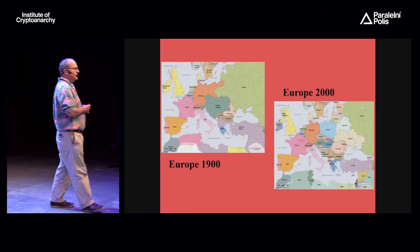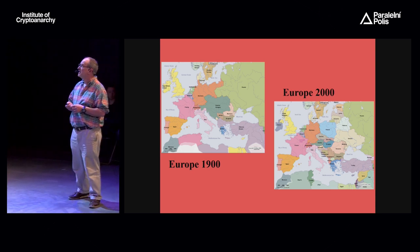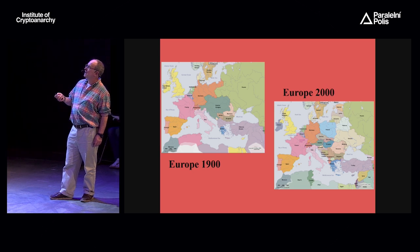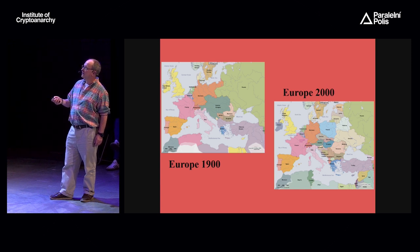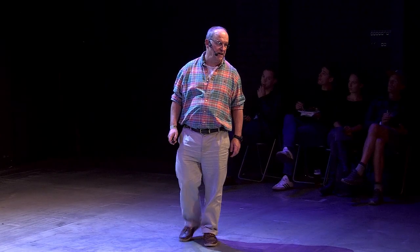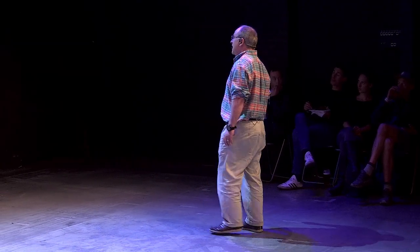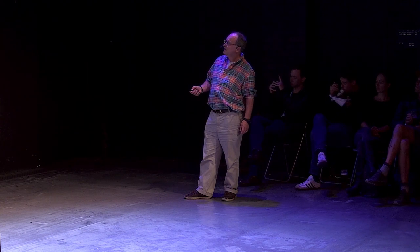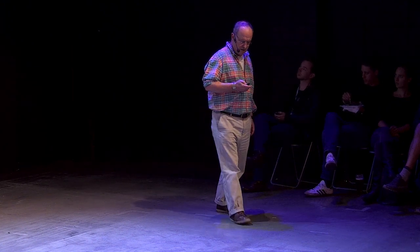If you go back to the beginning of the 20th century, Europe politically looked very different. There was a Russian Empire, Germany was much larger, there was the Austro-Hungarian Empire, the Ottoman Empire, and Northern Africa was all controlled by European powers. Fast forward 100 years to the beginning of the 21st century, all of those empires have more or less disappeared and the Northern African states are all independent nation states. The map has changed quite dramatically over 100 years.